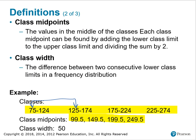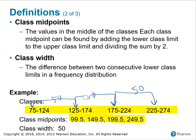The same procedure applies to the other two classes. The class width is the difference between two consecutive lower class limits. Finding the difference between 125 and 175, or between 175 and 225, all adjacent lower class limits, each gives a difference of 50. So the class width is 50.